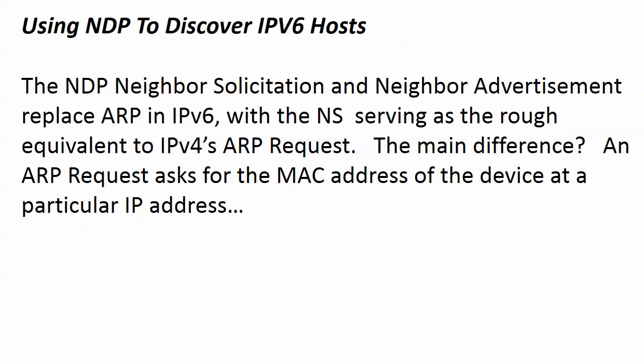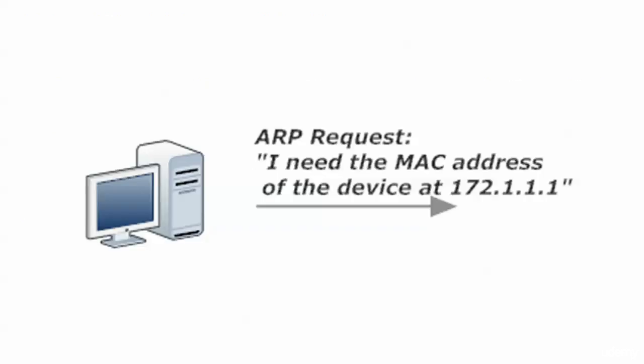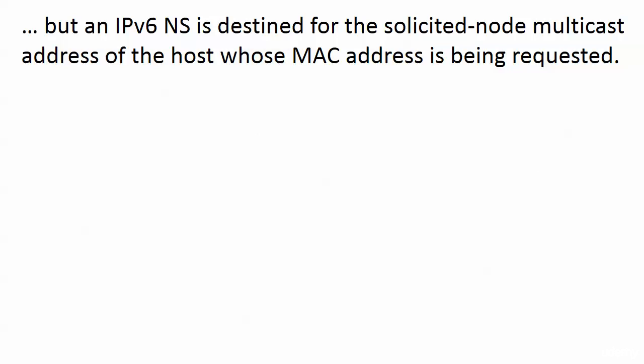NS and NA really replace ARP in IPv6 — there is no Address Resolution Protocol in IPv6. The NS serves as the rough equivalent to the ARP request in version 4. The main difference is that the ARP request asks for the MAC address of the device at a particular IP address, say 172.1.1.1. The neighbor solicitation is similar, but the destination address is a little different — it's destined for what we call the solicited node multicast address, the SNMA, of the host whose MAC address is being requested.